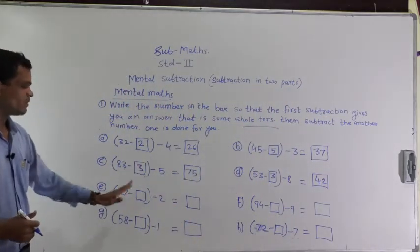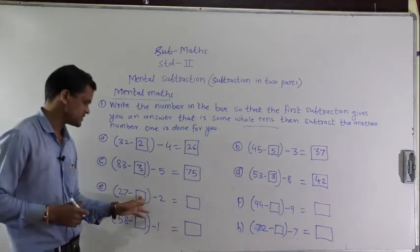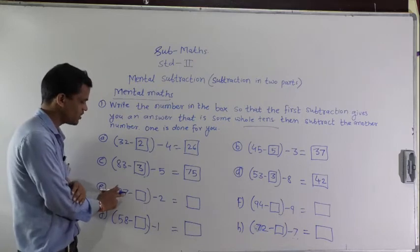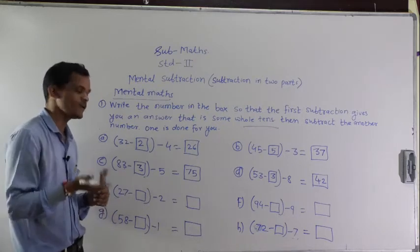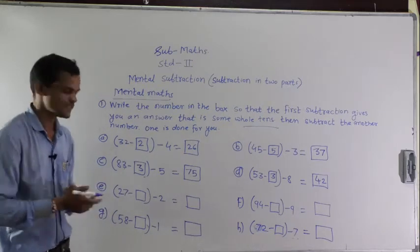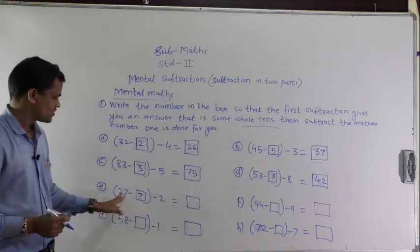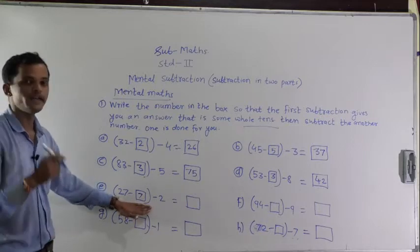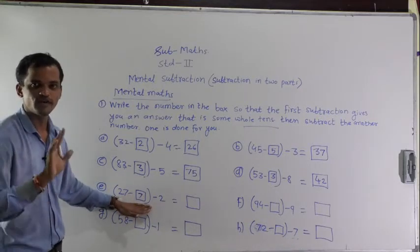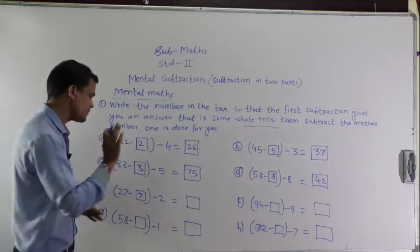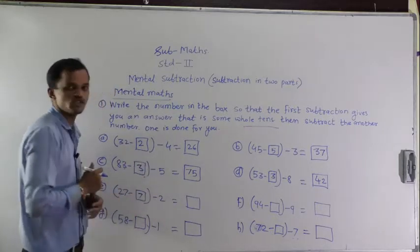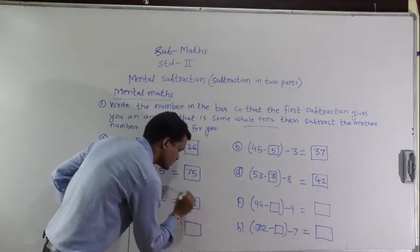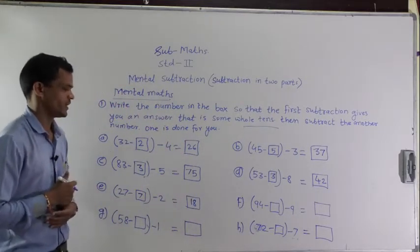Next: 27 minus blank minus 2. Which number should be subtracted from 27 so you get the whole ten? That is 7. So 27 minus 7 equals 20, and 20 is the whole ten. Next step: 20 minus 2 equals 18.